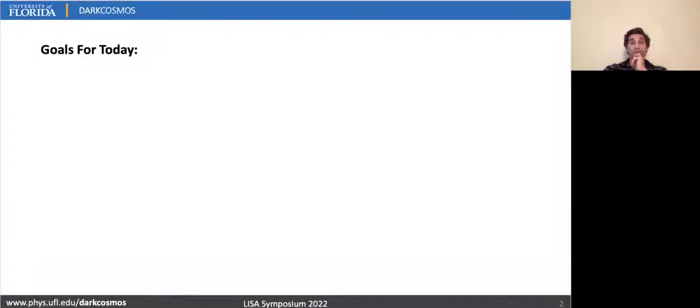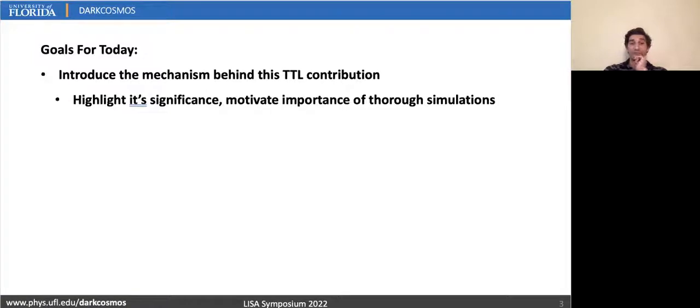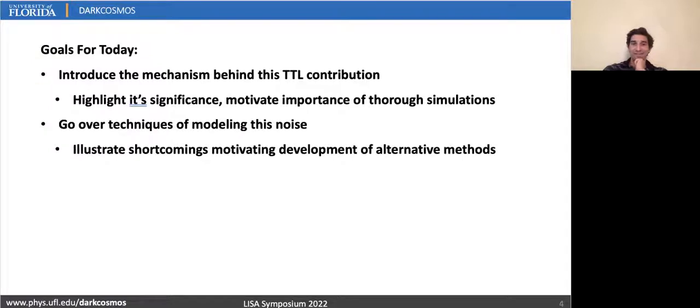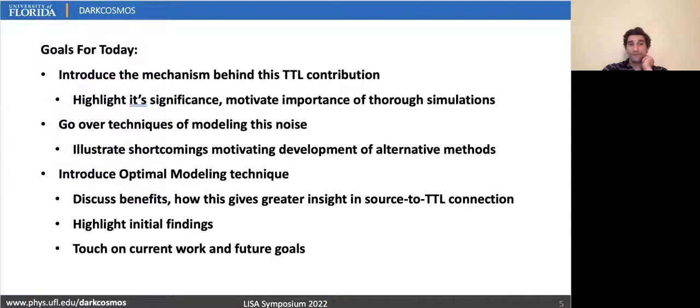Just quickly going over the structure of this talk, we first introduce how the wavefront errors in our initial beams generate tilt-length noise, highlighting the importance of these simulations. We then go over how this tilt-length can be modeled, highlighting the shortcomings of typical modeling schemes. And finally, we introduce our resulting simulation technique that overcomes prior shortcomings and offers greater insight into how the tilt-length is connected to the initial wavefront errors. We touch on some insights already gained using this scheme before outlining what we ultimately wish to do with these simulations.